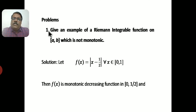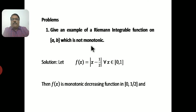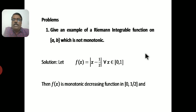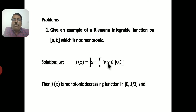Next, we look at some problems. Problem 1: Give an example of a Riemann integrable function on [a, b] which is not monotonic. We have to give an example of a function which is Riemann integrable but not monotonic. Consider f(x) = |x − 1/2| for all x in the interval [0, 1].